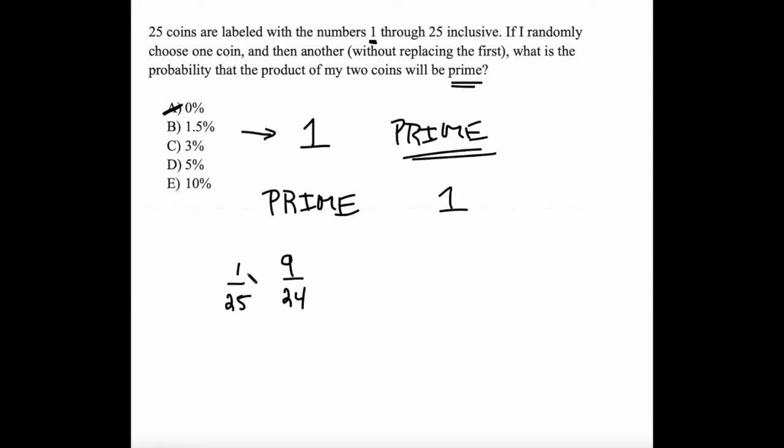And so I want the probability of this happening and then this happening, meaning that I'm going to multiply these probabilities together, and I get 0.015, which is 1.5%.